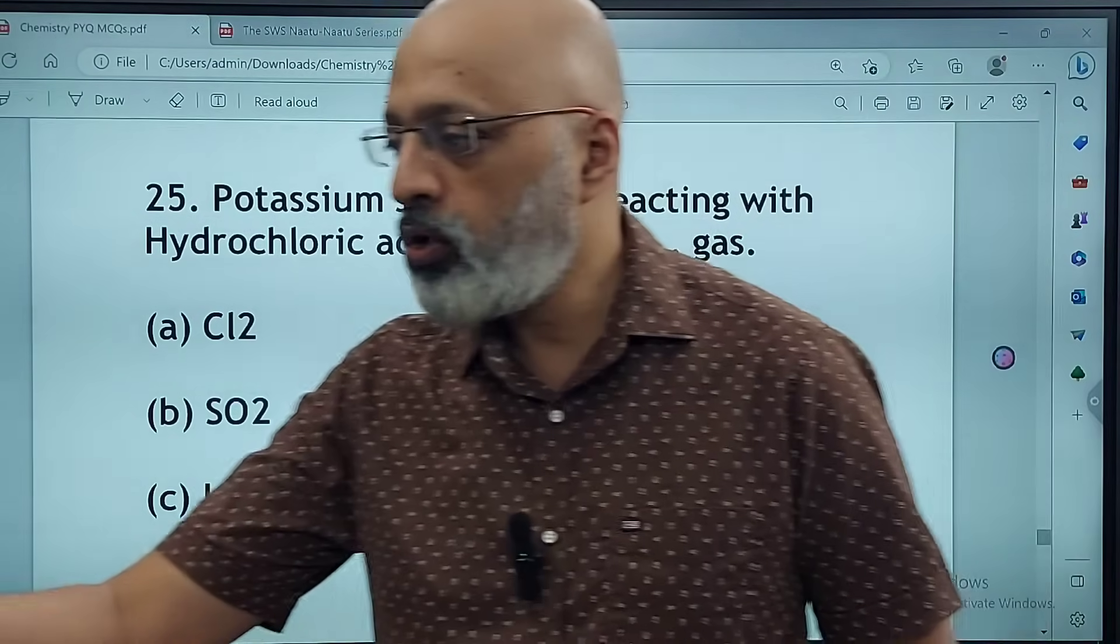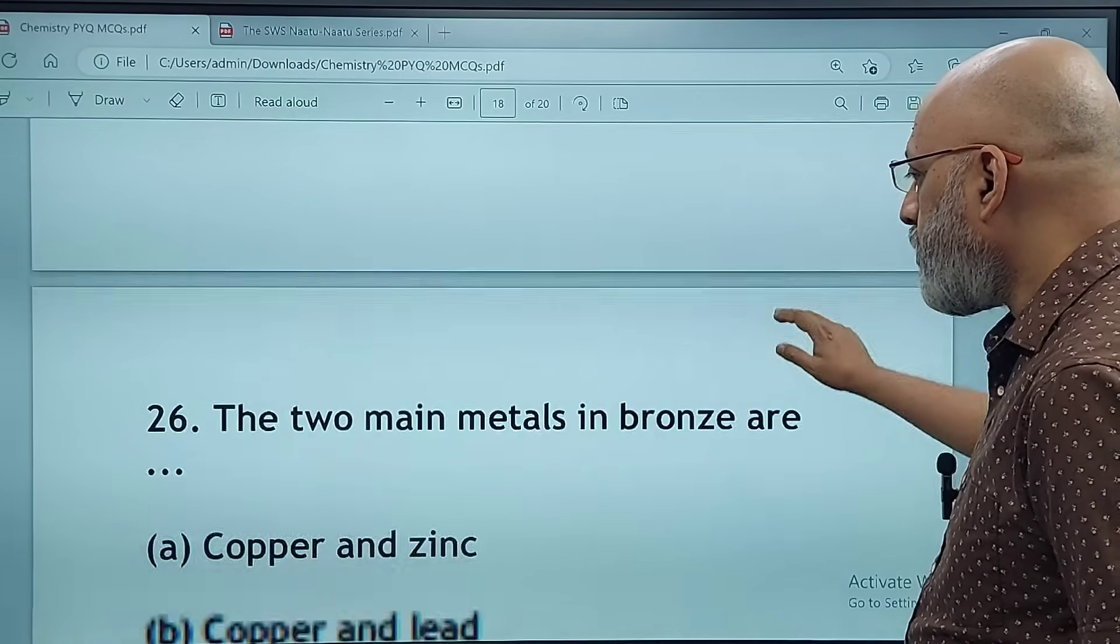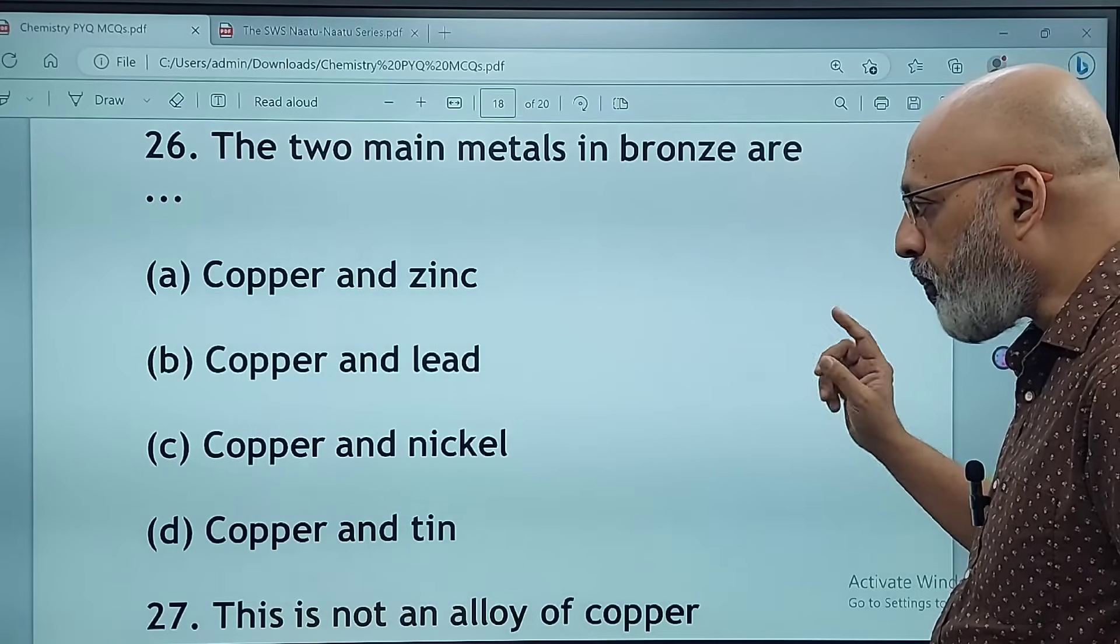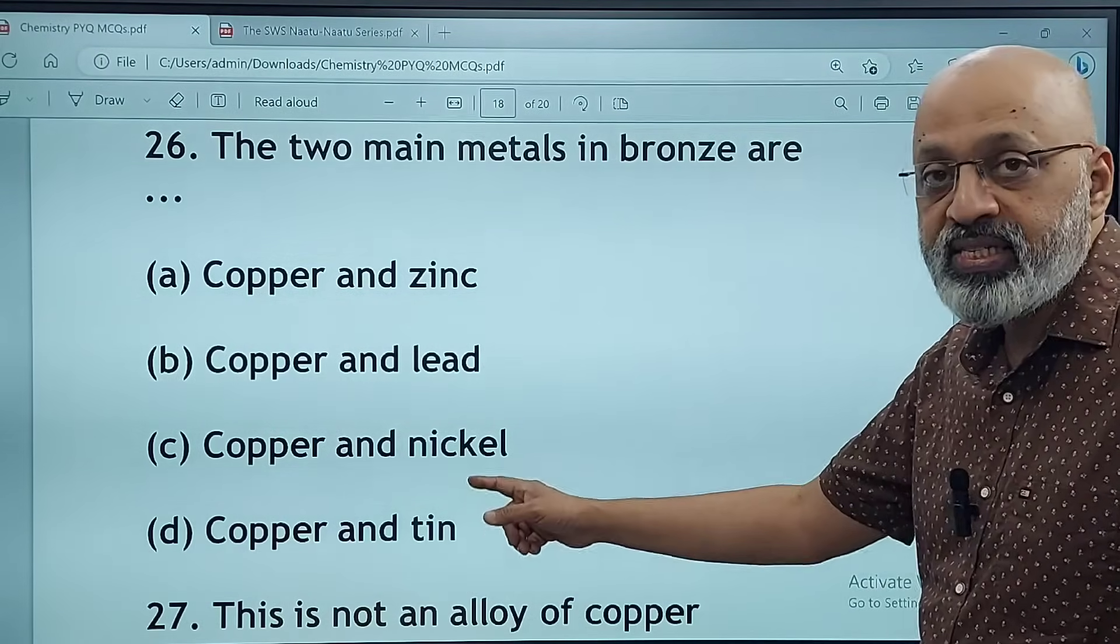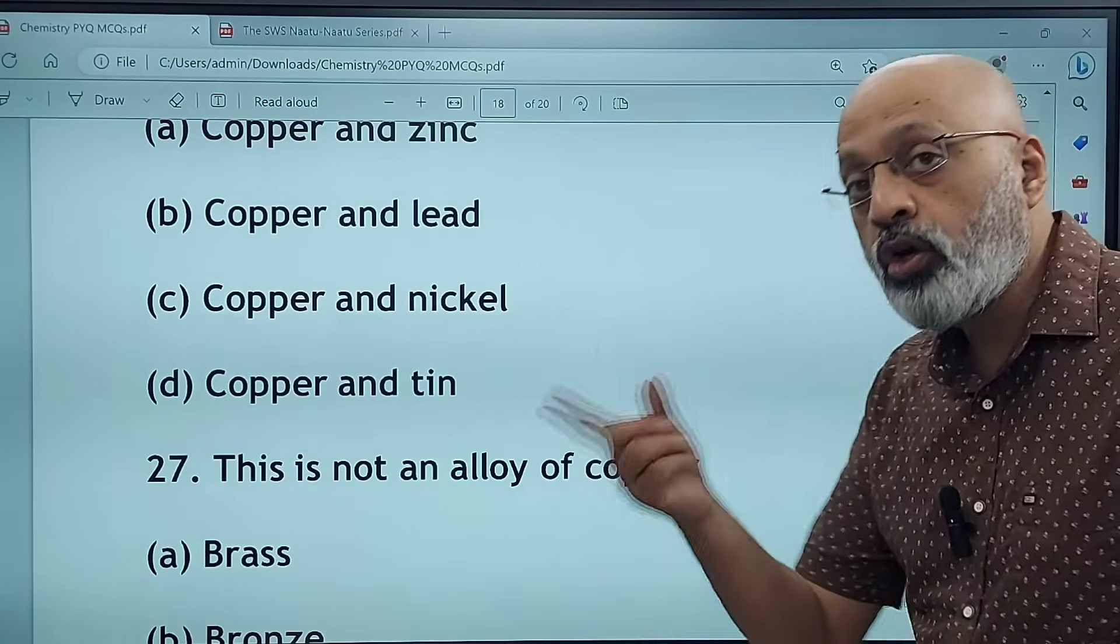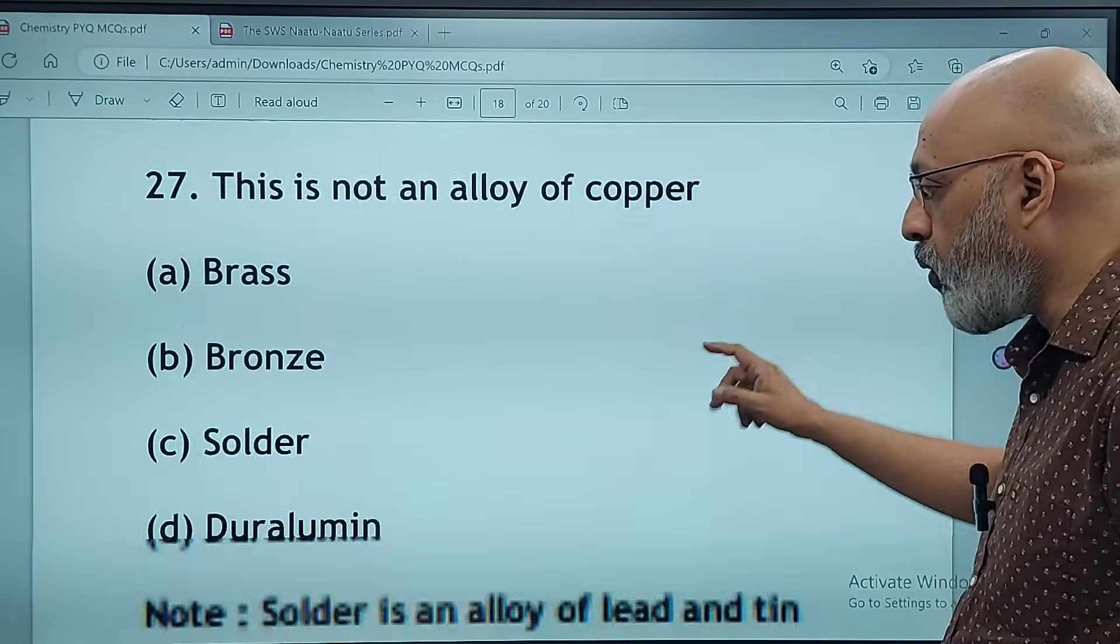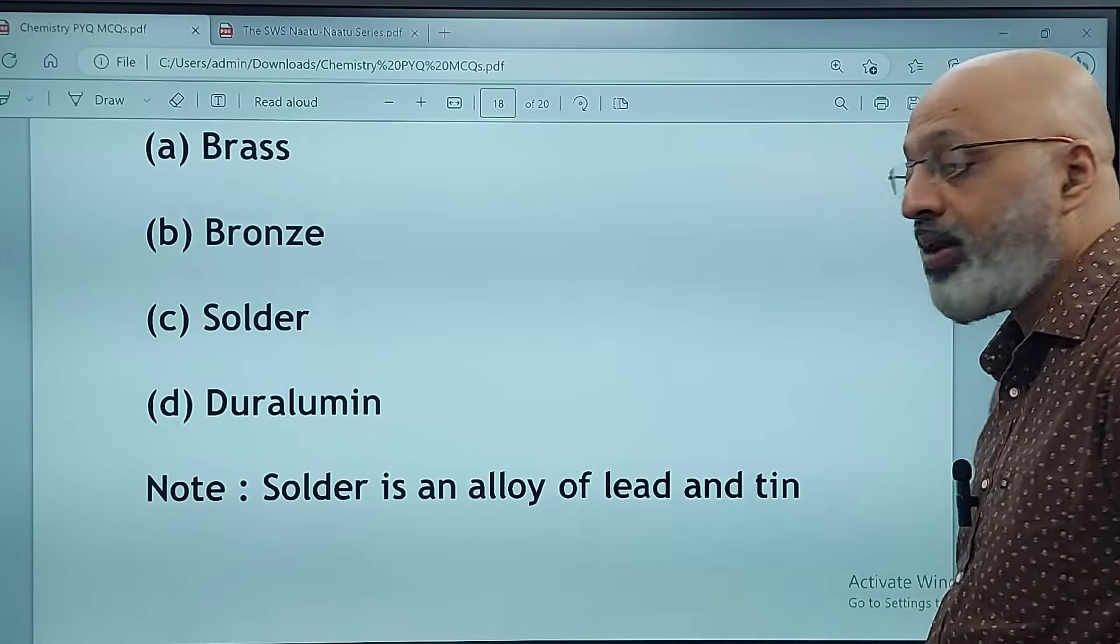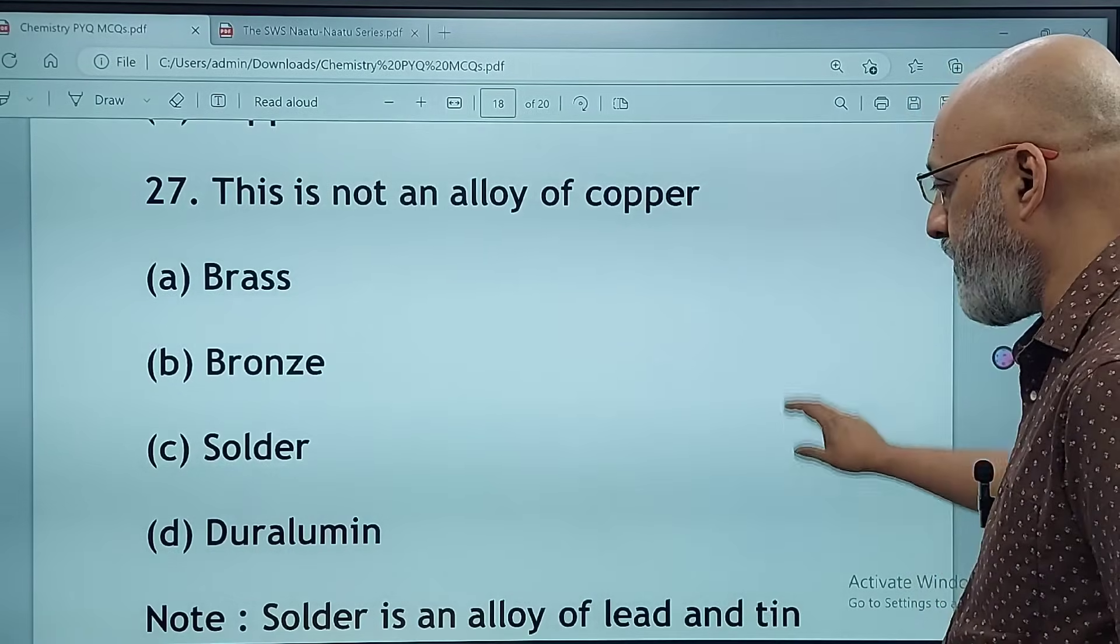A chloride that forms a precipitate that is soluble in excess of ammonium hydroxide is calcium chloride, ferrous chloride, ferric chloride, or copper chloride. The correct answer is D, copper chloride. Potassium sulfite on reacting with hydrochloric acid releases Cl2, SO2, or H2S. It is SO2. The two main metals in bronze are copper and zinc, copper and lead, copper and nickel, or copper and tin. The correct answer is D, copper and tin. Which of these is not an alloy of copper: brass, bronze, solder, or duralumin? The correct answer is solder, which is an alloy of lead and tin.